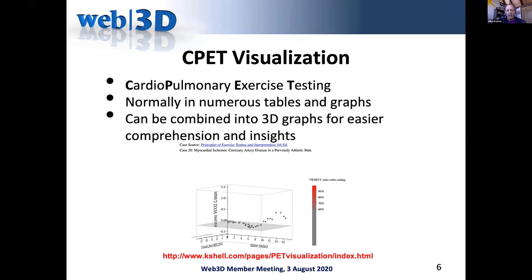Another medical working group project involves cardiopulmonary exercise testing (CPET) visualization. This testing currently involves looking at numerous tables and graphs of different physiologic parameters for athletes, people with lung disease, or those who've had heart attacks, trying to understand their physiology. Combining these data points in 3D using X3D shows a lot more insights and makes the information much quicker to visualize and understand.